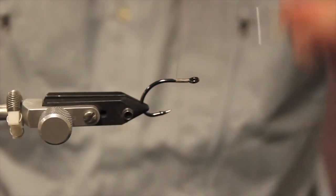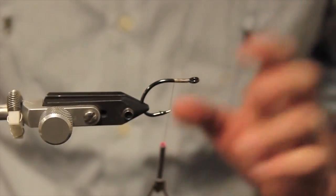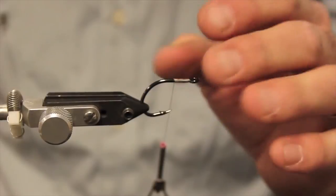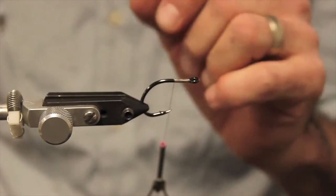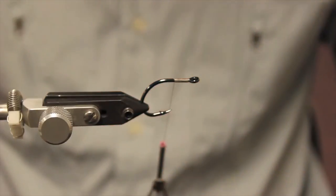Start by wrapping the hook about halfway back. Since a saltwater fly, a bait fish pattern, you're going to want to just look for all you need is to create a profile for the bait fish. And with this Steve Farrar's Flash Blend,